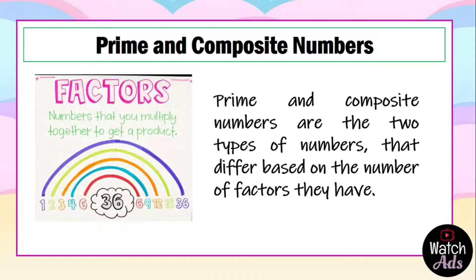Factors are the numbers that you multiply together to get a product. For example, to get 36, you have to multiply 1 and 36, 2 multiplied by 18 is equal to 36, 3 multiplied by 12 is equal to 36, 4 multiplied by 9 is equal to 36, and 6 multiplied by 6 is equal to 36.